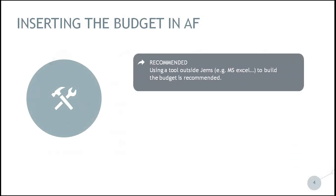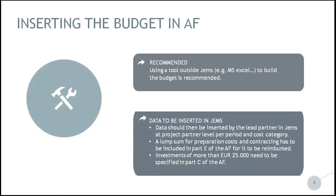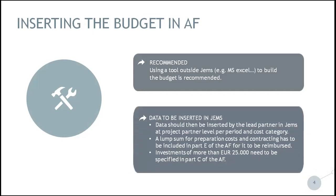When building the project budget, we recommend using a support tool outside of JAMES — it can be Microsoft Excel or another tool. Tools used by applicants must allow planning at the level of each partner, cost categories, and reporting periods, and also the use of simplified cost options applicable and required by the partner. The prepared data should then be inserted in JAMES by the lead partner at the project partner level, and the total budget in JAMES will be calculated automatically. A lump sum for preparation costs and contracting has to be included in Part E of the application form, and investments of more than 25,000 euro need to be specified in Part C of the application form.